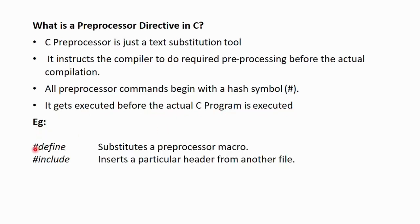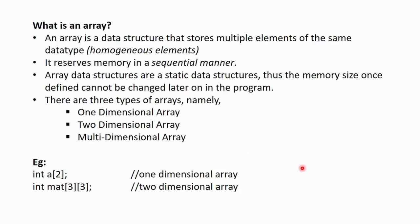Examples, hash define that substitutes a preprocessor macro and hash include that inserts a particular header from another file. There are other examples of the preprocessor directives also. Next question, what is an array?